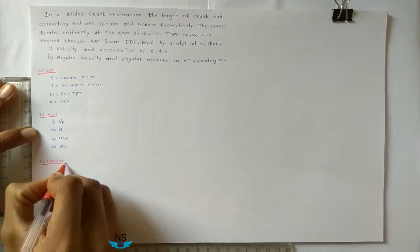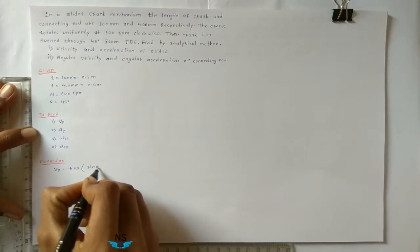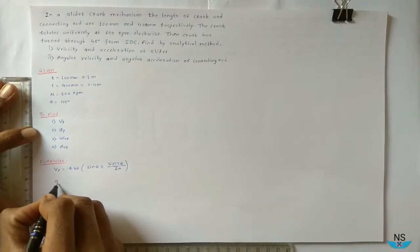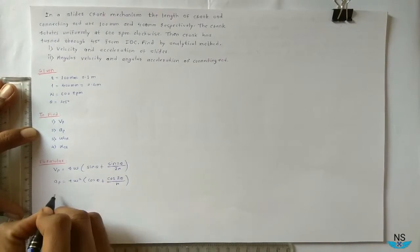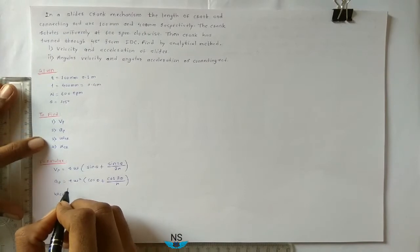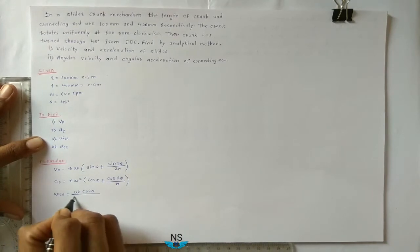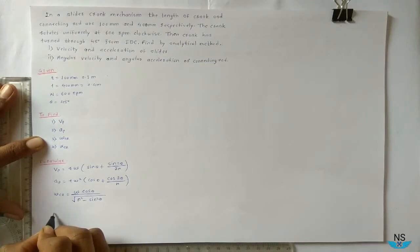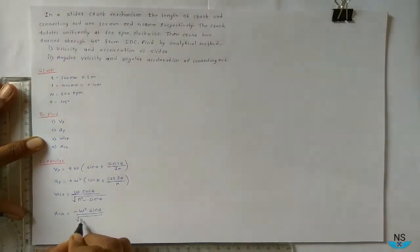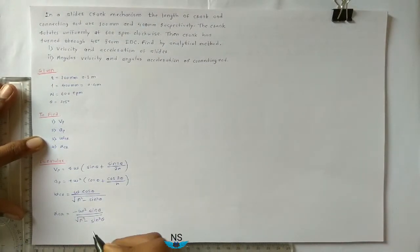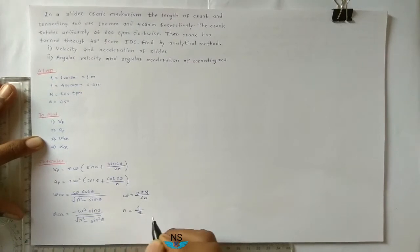Formulae: Velocity of piston Vp equals R·ω·(sin θ + sin 2θ / 2n). Acceleration of piston Ap equals R·ω²·(cos θ + cos 2θ / n). Angular velocity of connecting rod ω_cr equals ω·cos θ divided by the square root of (n² − sin² θ). Where ω equals 2πN/60, and n equals L divided by R.